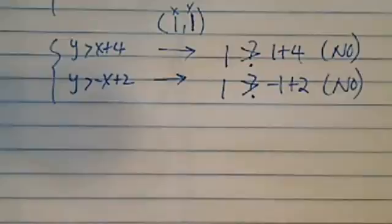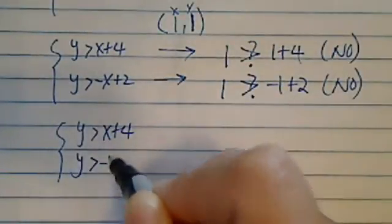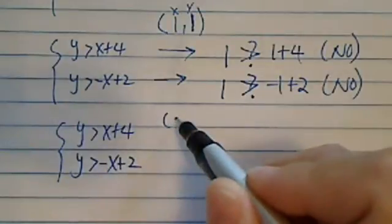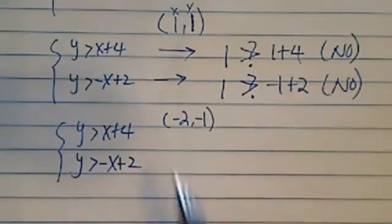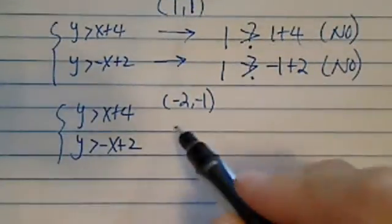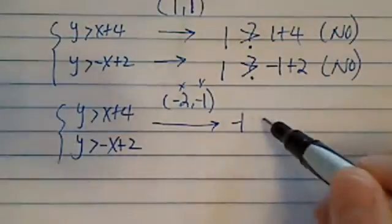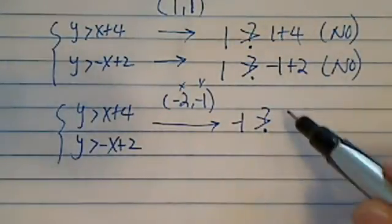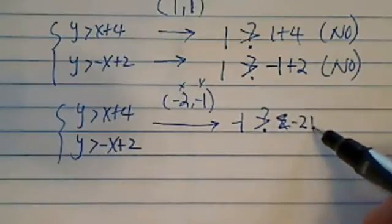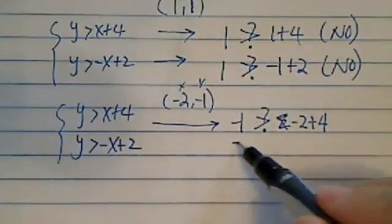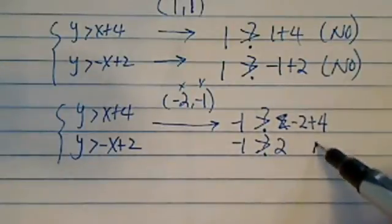Let's try one more point. You have y is bigger than x plus 4, y is bigger than minus x plus 2. This time we'll try the point minus 2, minus 1. So this is x and this is y. Y is minus 1, is it true minus 1 is bigger than x plus, or x is minus 2, minus 2 plus 4. So I have minus 1, is it true it's bigger than 2? The answer is no.